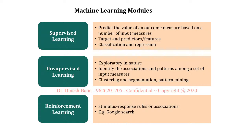Reinforcement learning is based on the response-to-stimulus method. Google Search is one example of reinforcement learning. These are the three different types of algorithms: supervised, unsupervised, and reinforcement learning.